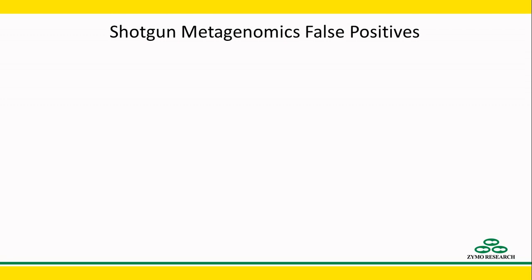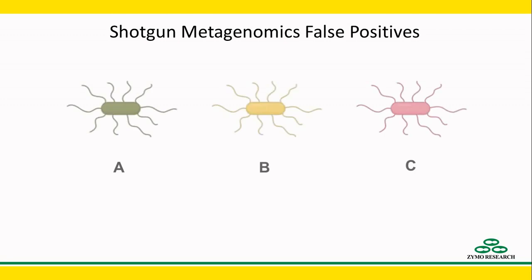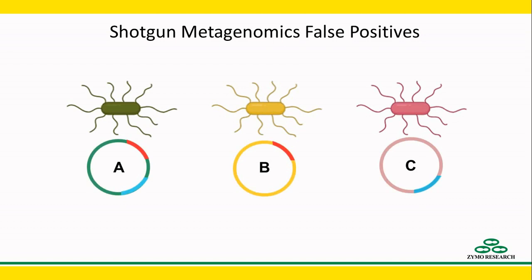These closely related genomes can be from different species of the same or even a different genus. For example, assume there are three closely related microbes A, B, and C, and they share some sequences in common, where species A shares some sequences only with B and some other sequences only with C.